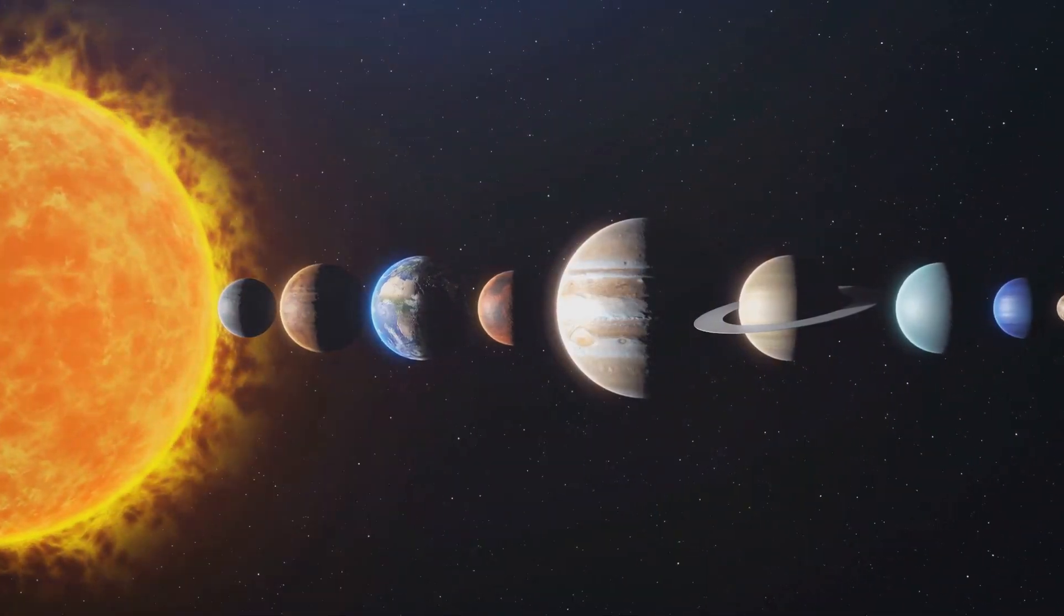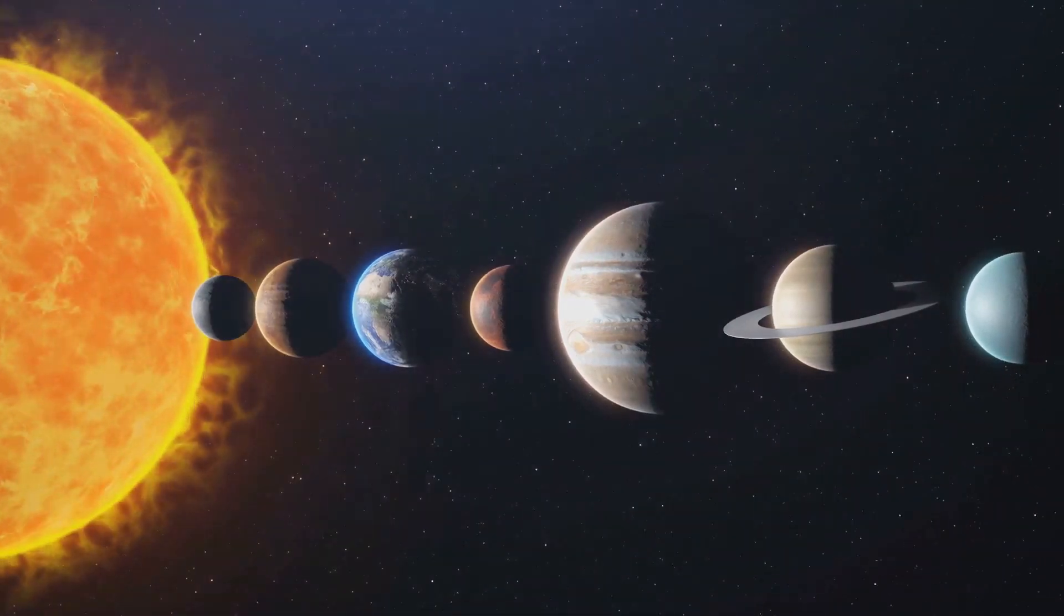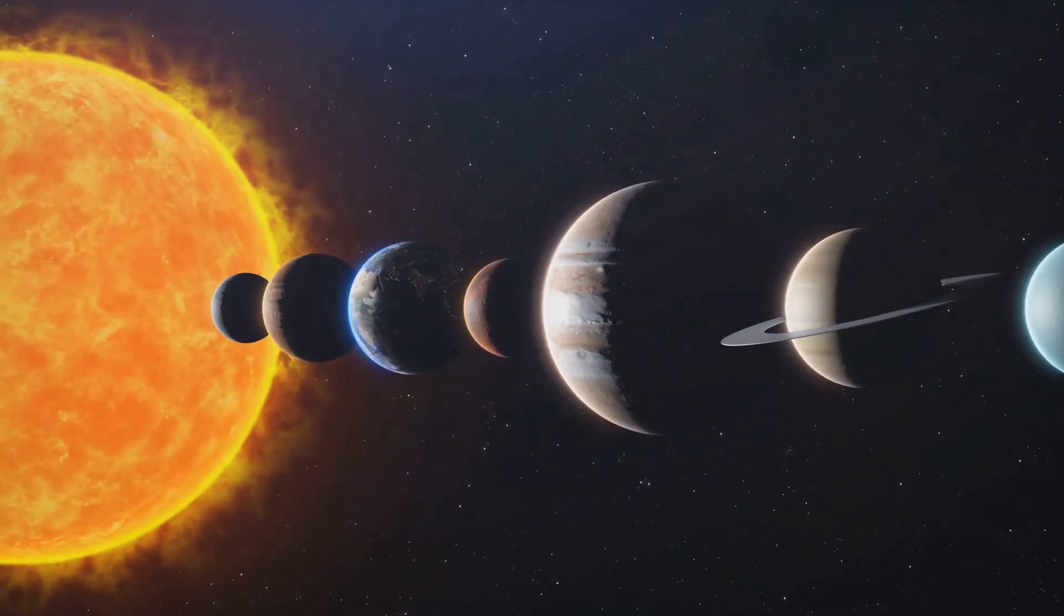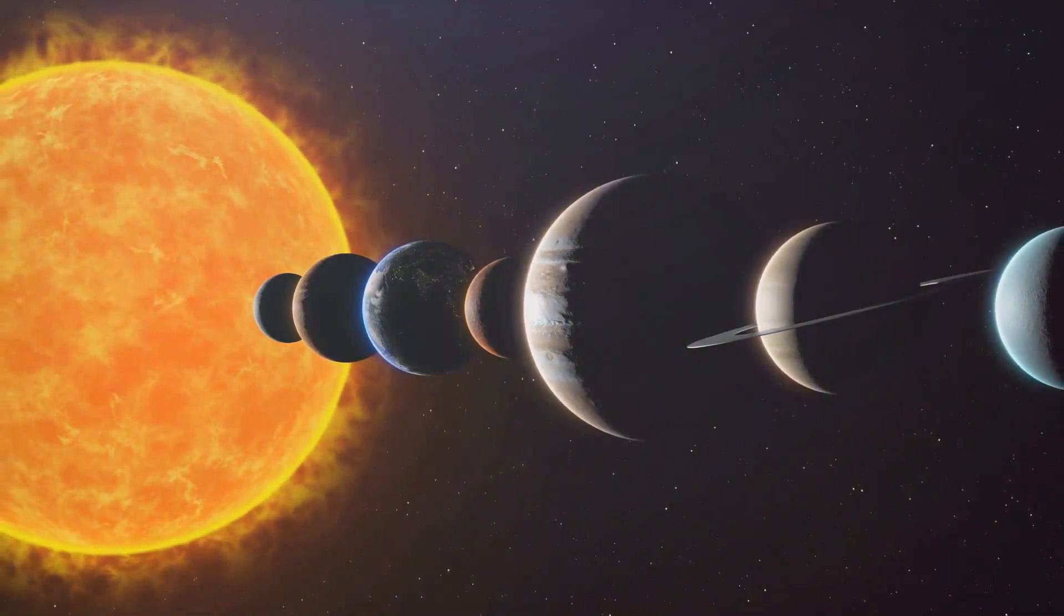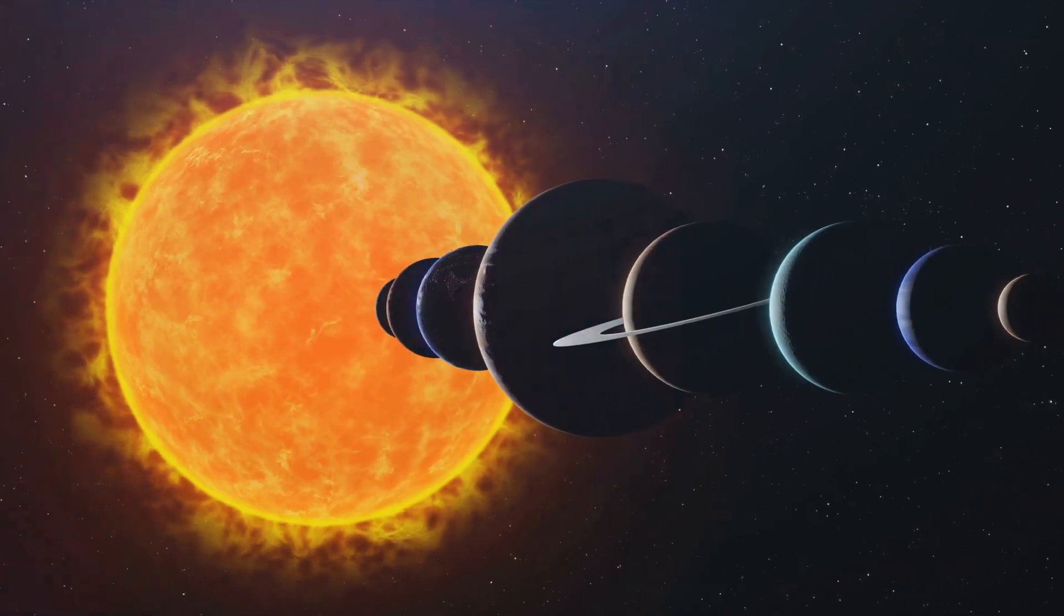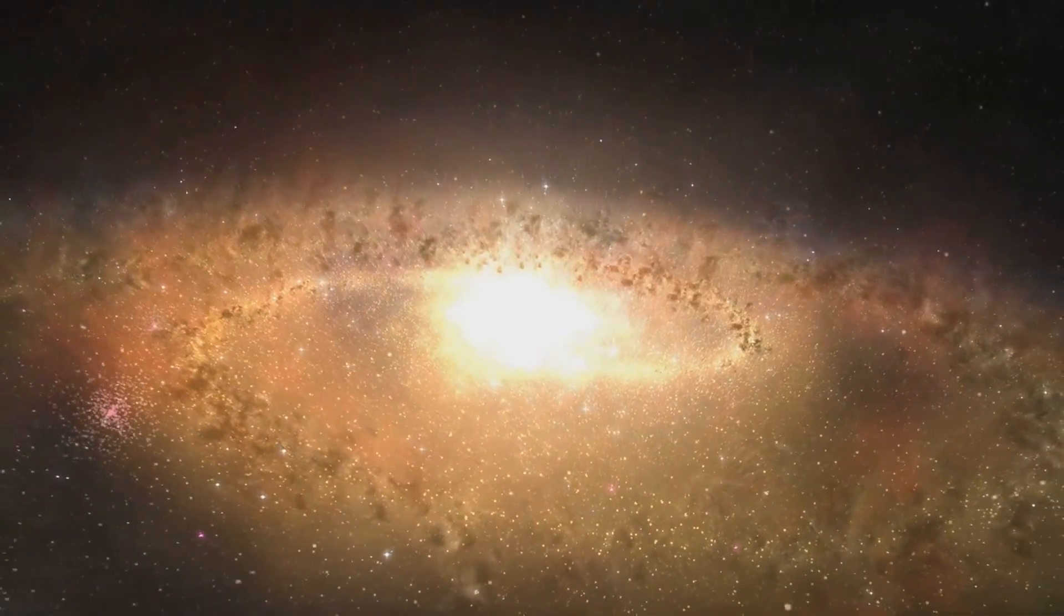This theory offers a tantalizing possibility. By studying these planets, we could potentially predict Earth's future and uncover its past. And if we were to find a way to travel to Venus, maybe we could even escape Earth's potential Martian fate. But let's take this idea one step further.